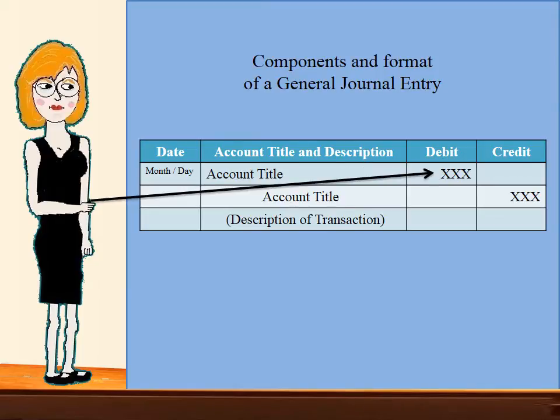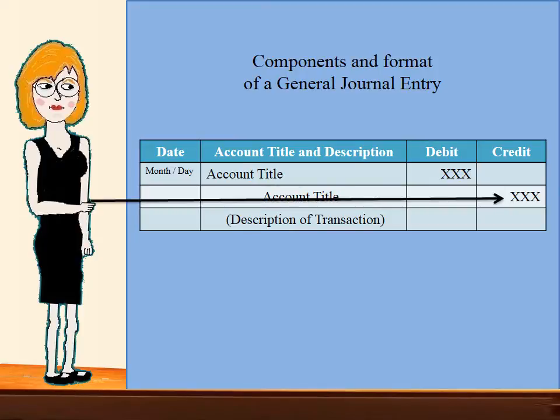Those terms simply mean left and right. You must debit at least one account and credit one account to the same amount. Now let's look at some journal entries pertaining to property, plant, and equipment.